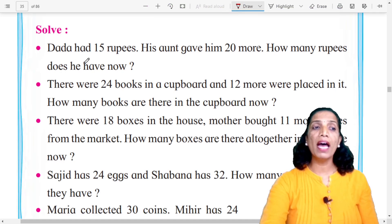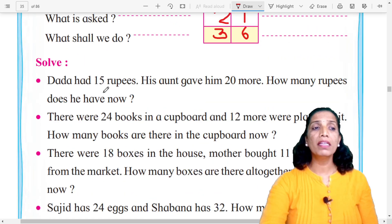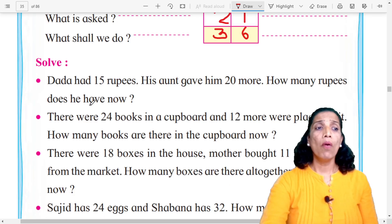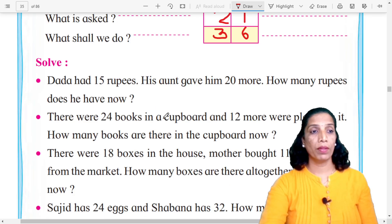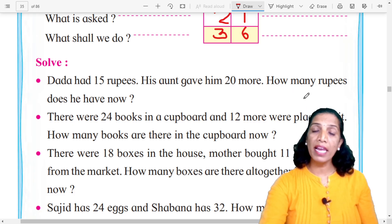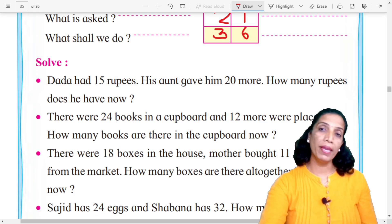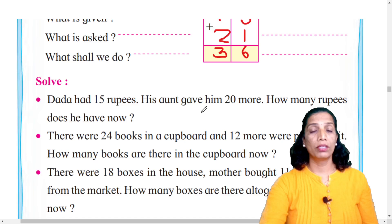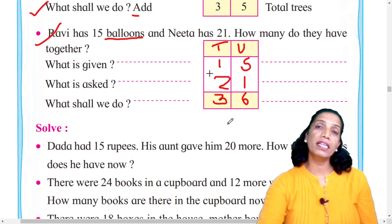Dada had 15 rupees and his aunt gave him 20 more. How many rupees does he have now? What is given? Rupees — the information about rupees is given. What is asked? Total rupees — how many rupees altogether. What shall we do? We can add. Now create a tens and units table, fill in the given information, and solve it yourselves. It is easy!